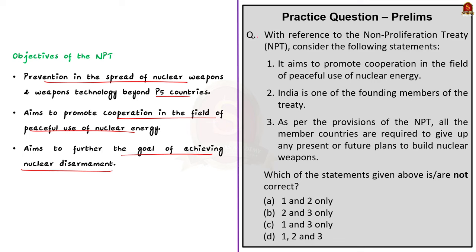Coming back to the question: statement one is correct — it is one of the objectives of NPT to promote cooperation in the field of peaceful use of nuclear energy. Statement two is incorrect — India has never signed NPT and is not a member. Statement three is also incorrect — articles 2 and 4 require member countries to give up plans to build nuclear weapons, but exempt the P5 countries, so the provisions do not apply uniformly to all countries. The question asks only for incorrect statements, so the correct answer is option B: 2 and 3.